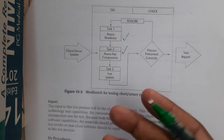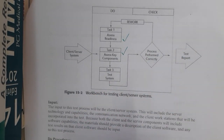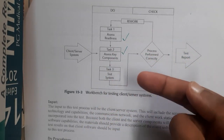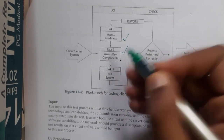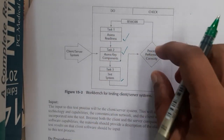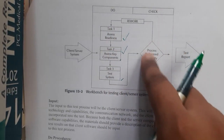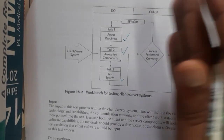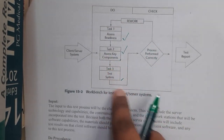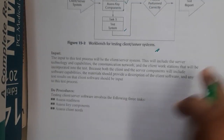The second task is accessing key components — for example, if you paid for a service like a Kindle book, it should be accessible in your account. The third task is system testing. Once all three tasks are done, you move to the check phase. If everything is perfect you generate the report; if anything is not perfect, you rework and come back to the process until everything is done.